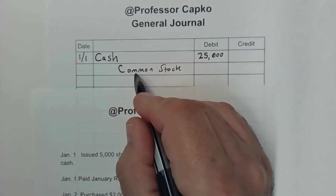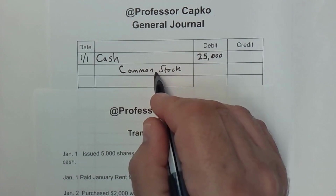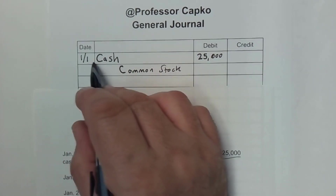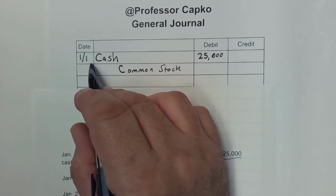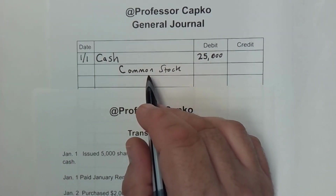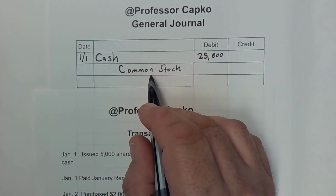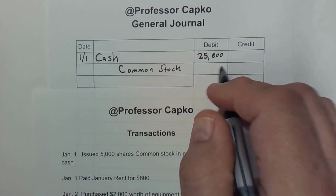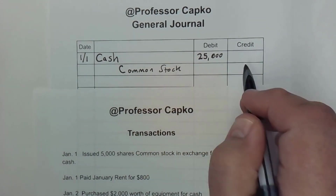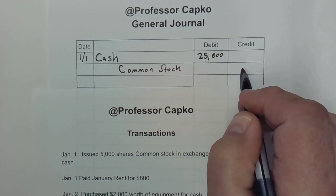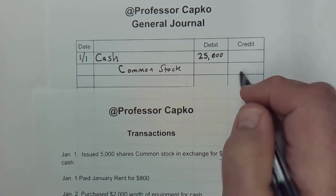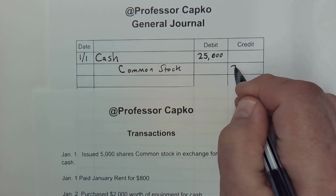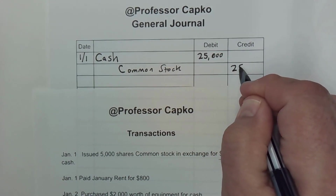So I've gone to the next line and I've indented it. It's the same transaction, so I don't need to write the date a second time. And the value — I'm going to put the value of the common stock here, and that's the $25,000.